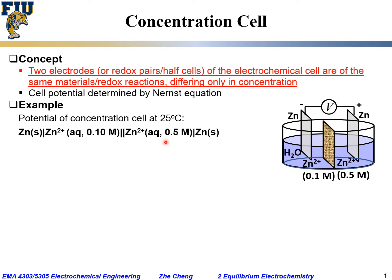They differ only in concentration, and between them the double vertical line represents an ion-permeable membrane that prevents the mixing of cations but allows anions to go through. This membrane is essential to prevent direct mixing between the two electrolyte solutions. Without this membrane, you would quickly have uniform cation concentration, but with the membrane, the cation concentration difference can be maintained. Because of this concentration difference, there will be a potential difference between the two electrodes.